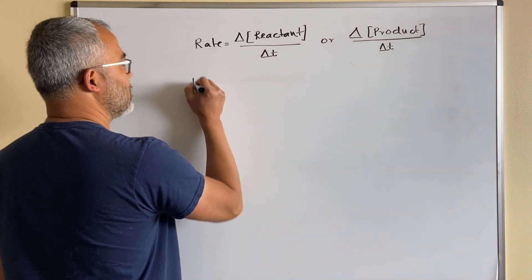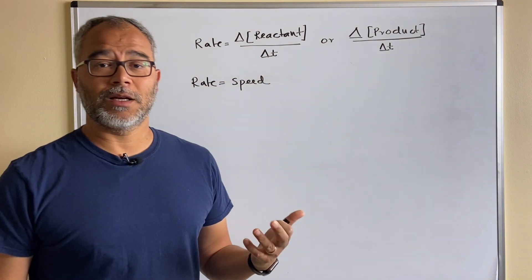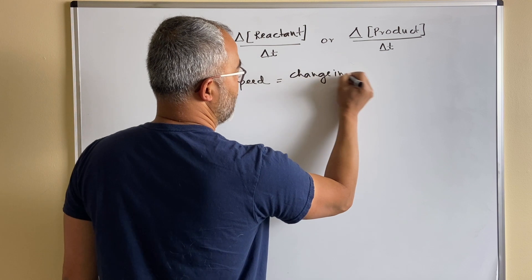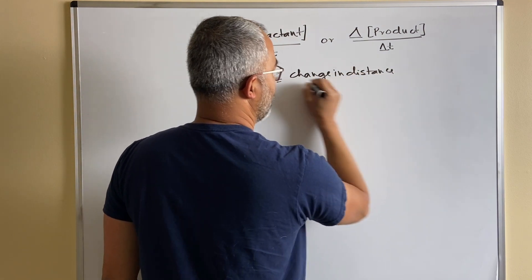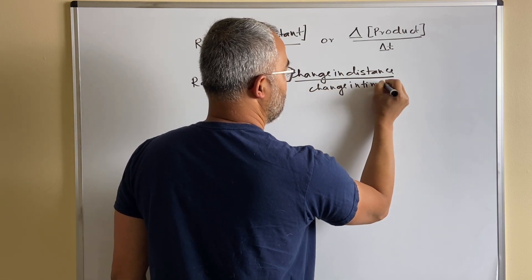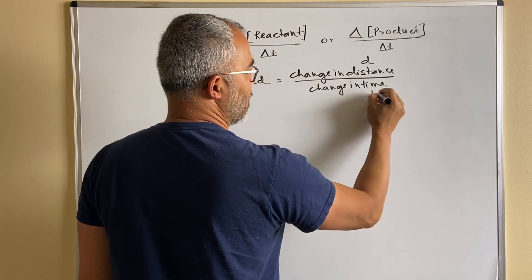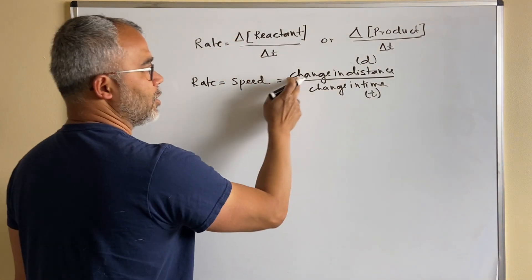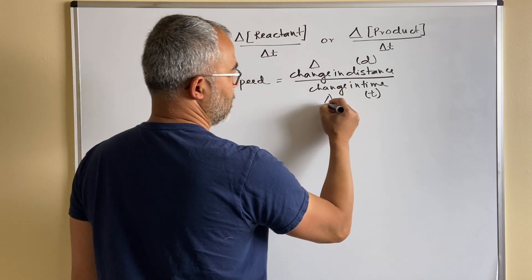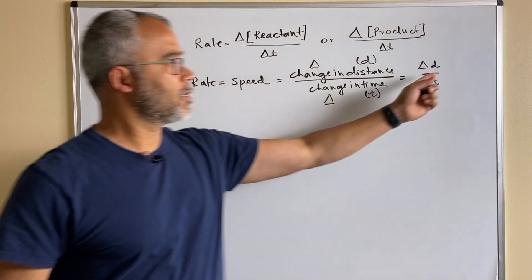Rate is simply the speed of a reaction. If you think about your physics classes, speed is defined as the change in distance over the change in time. If we assume distance is d and time is t, we denote the change with a delta symbol, so this becomes Δd over Δt — change in distance over change in time.